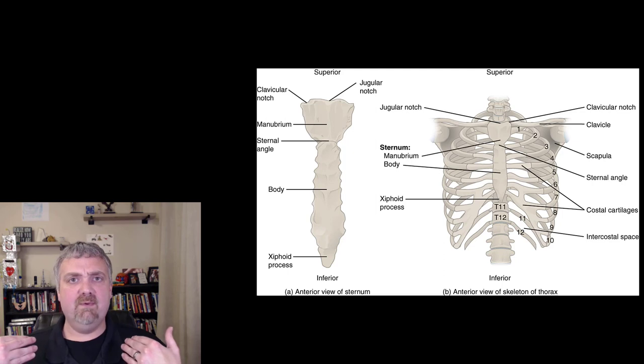Again, you can't really palpate rib one. So rib two is a very important palpation point if you're counting ribs or counting intercostal spaces, like when you're listening to the heart or putting on pads for an EKG.